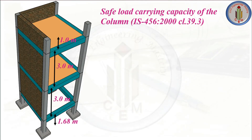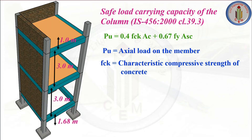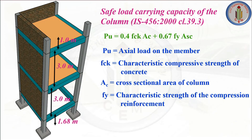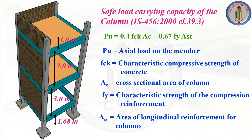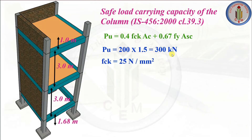Now let's find out the safe load carrying capacity of the column. As per IS 456-2000, Clause 39.3, the formula is: PU = 0.4 × fck × Ac + 0.67 × fy × Asc. PU is the axial load, fck is the characteristic compressive strength of concrete, Ac is the cross-sectional area of the column, fy is the characteristic strength of reinforcement, and Asc is the area of longitudinal reinforcement. The unfactored load is 200 kN; multiplying by factor of safety 1.5 gives a factored load PU = 300 kN.